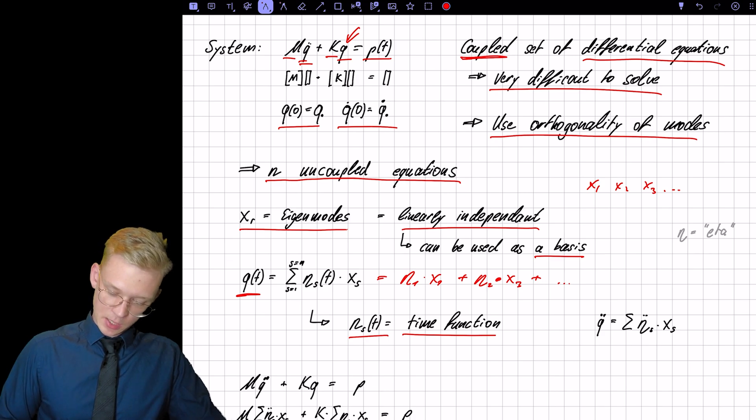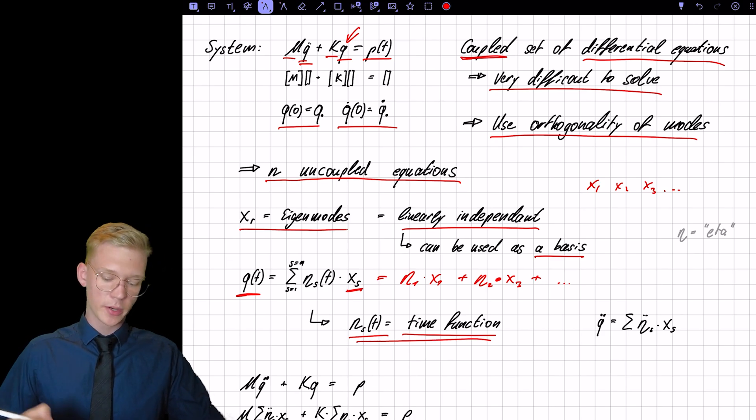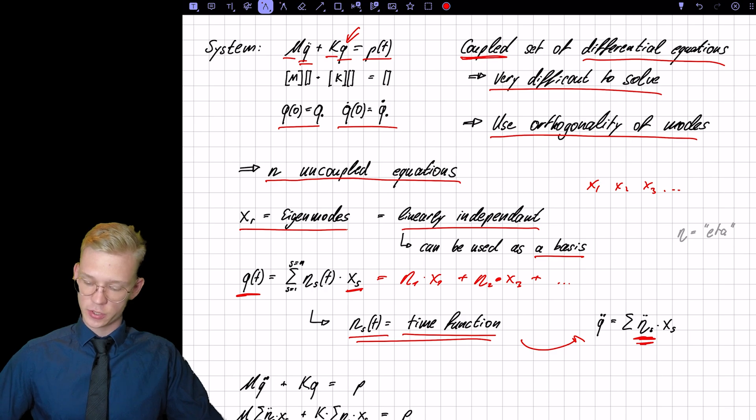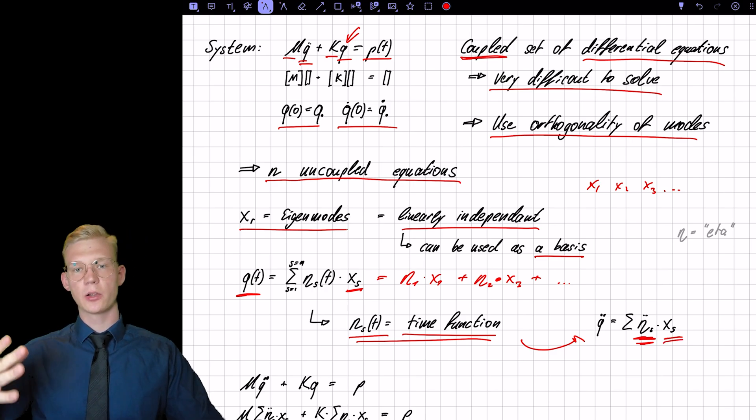So this is our time function that we need to find because we already know the eigenmodes. And if we differentiate it twice we only have to differentiate the time function because our eigenmodes are constant.